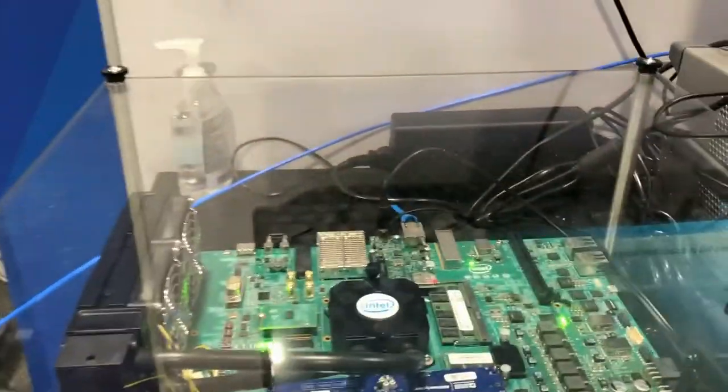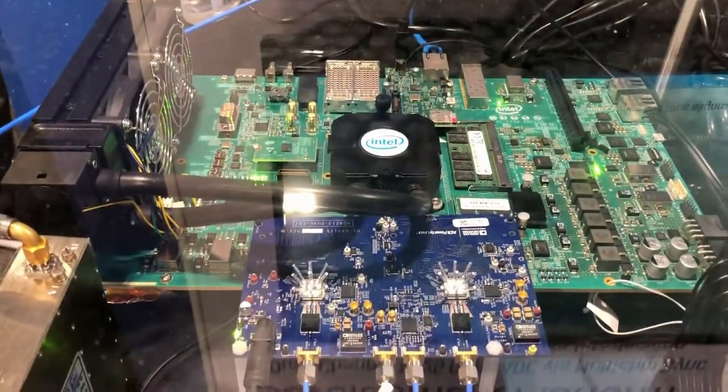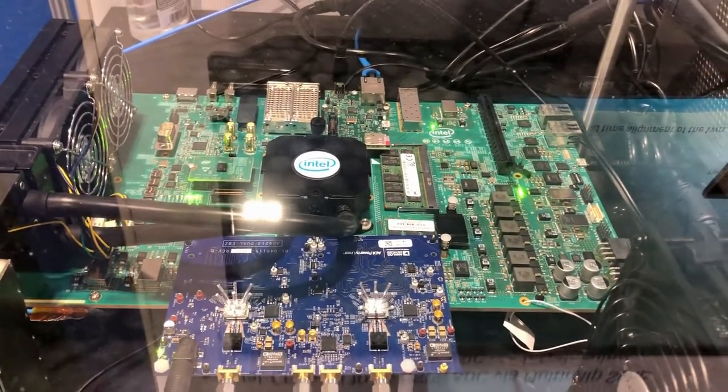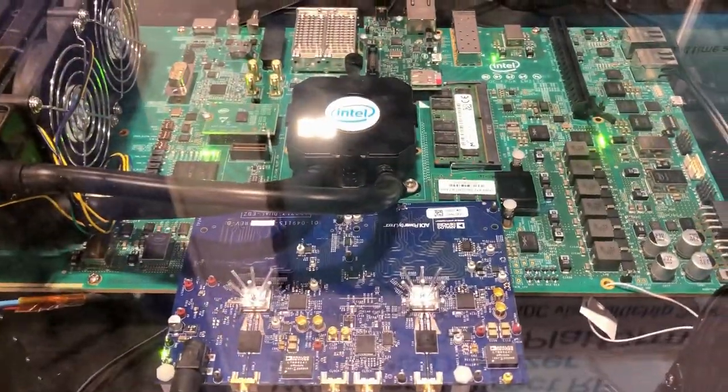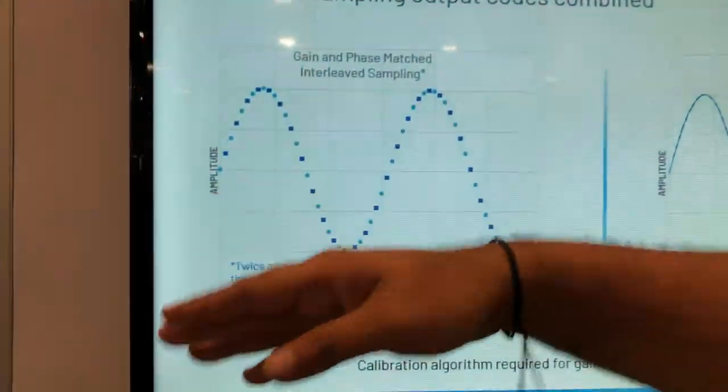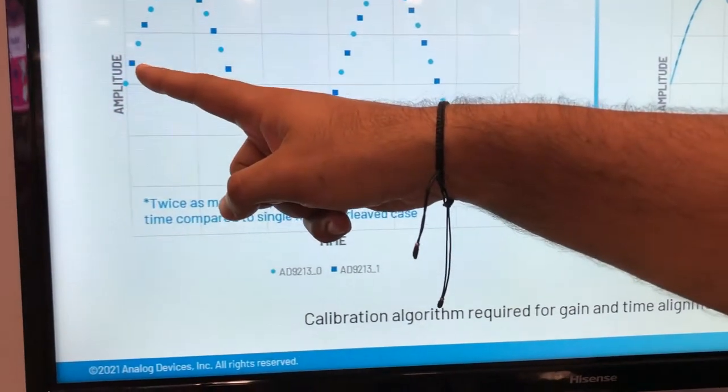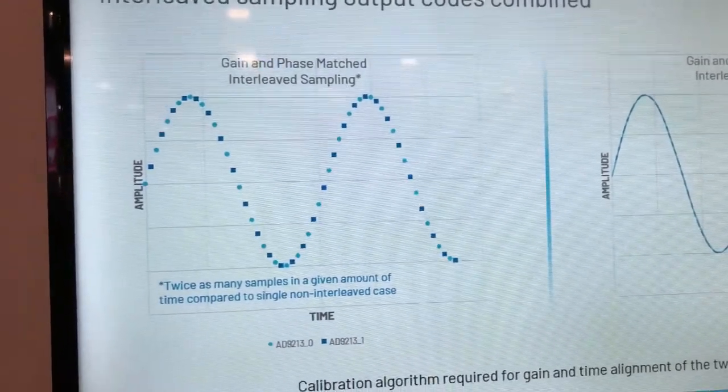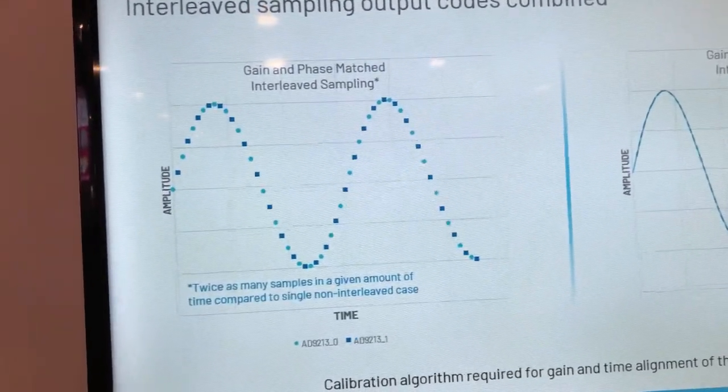The way we do that is we have two 4377s, one each for the AD9213s, and the two 4377s can be synchronized with each other. Then we use one of the sample clocks that we put 180 degrees out of phase with the other, which means one sample comes from one of our 10 gigasample per second converters, and then the other one comes from the other. So it's essentially a system level ping-pong interleaving system supported by the 4377.